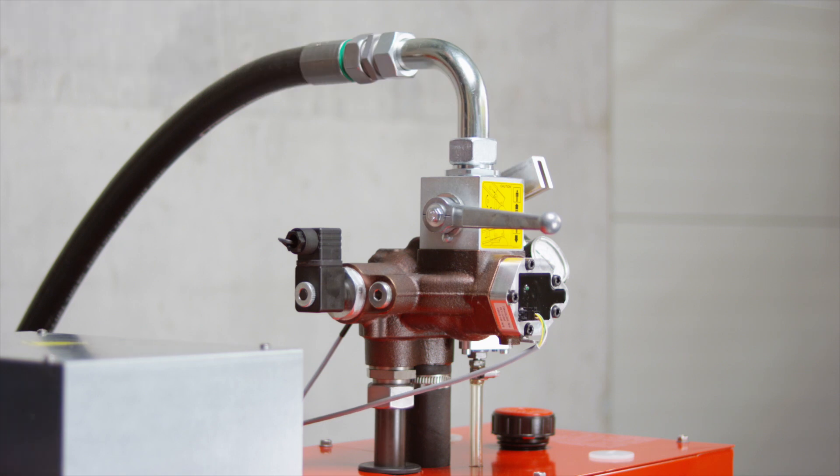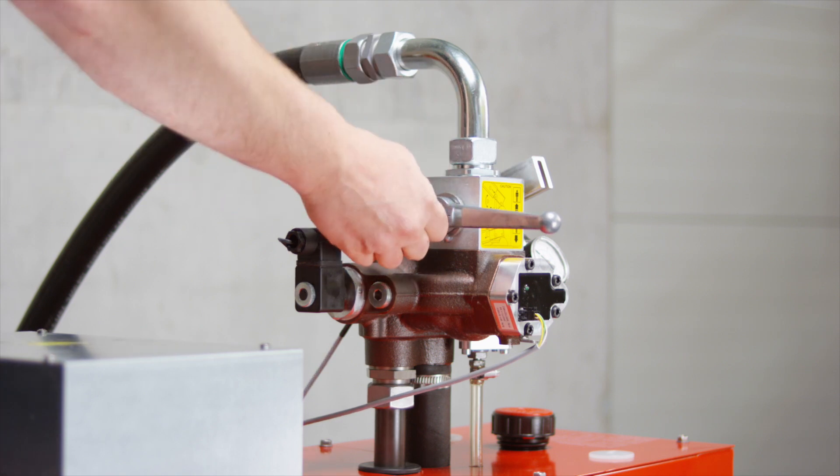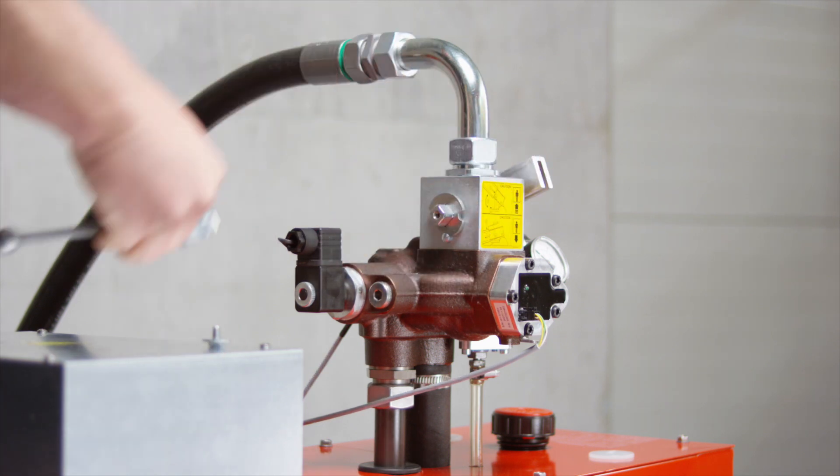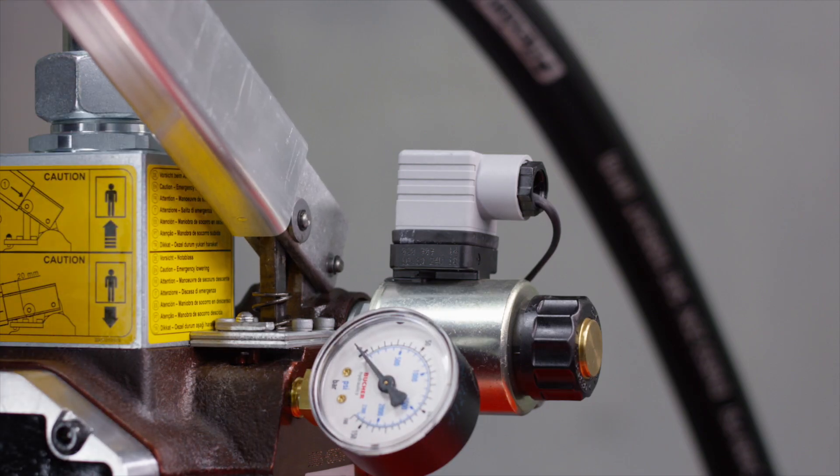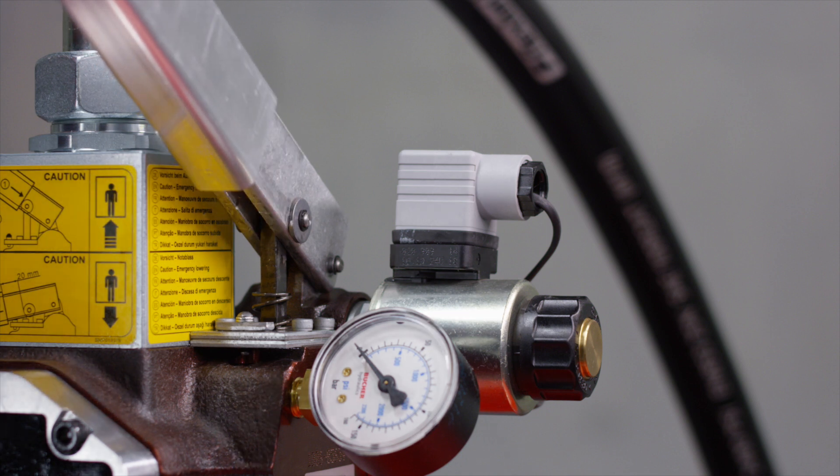Close the ball valve and remove the lever. Push the extension pipe onto the handle stub of the hand pump as far as it will go, then retract by approximately 3 cm.